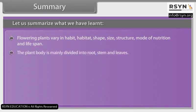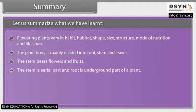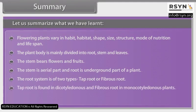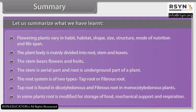The plant body is mainly divided into root, stem, and leaves. The stem bears flowers and fruits. The stem is the aerial part and root is the underground part of a plant. The root system is of two types: taproot or fibrous root. Taproot is found in dicotyledonous and fibrous root in monocotyledonous plants. In some plants, root is modified for storage of food, mechanical support, and respiration.